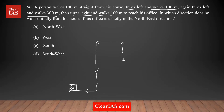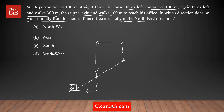Our assumption here was that the man's house is facing north. So he walks 100 meters straight from his house. Now the question is: in which direction does he walk initially from his house if his office is exactly in the northeast direction? In this scenario, his office is in which direction? This is the direction, this is the house — so your office is in this direction, which is south-west.